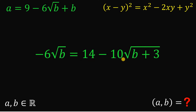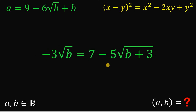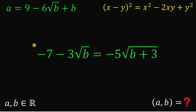Now, 6, 14, and 10 are all divisible by 2, so let's divide everything by 2. Negative 6 divided by 2 gives negative 3; 14 divided by 2 is 7; negative 10 divided by 2 gives negative 5. Let's subtract 7 on both sides, then multiply all terms by negative 1 so everything becomes positive.